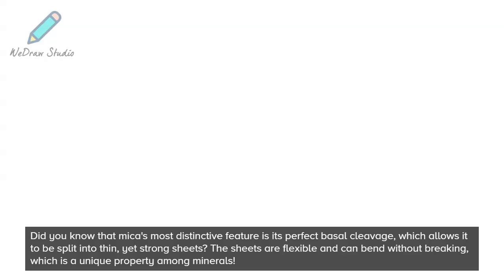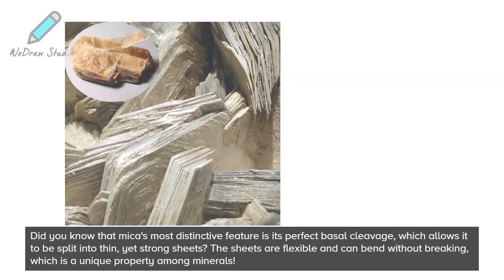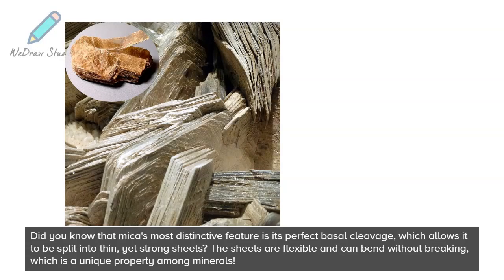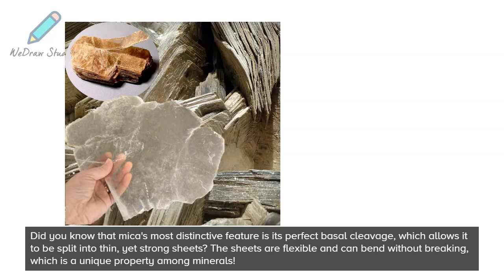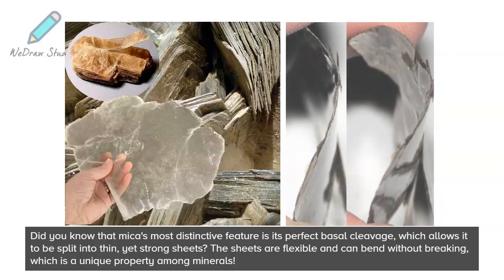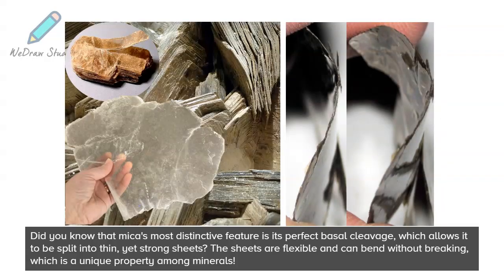Did you know that mica's most distinctive feature is its perfect basal cleavage, which allows it to be split into thin yet strong sheets? The sheets are flexible and can bend without breaking, which is a unique property among minerals.